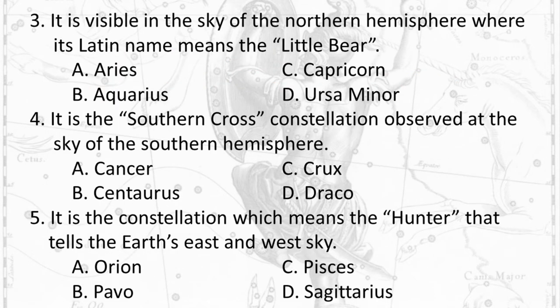Question 3: It is visible in the sky of the northern hemisphere where its Latin name means 'the Little Bear.' A. Aries B. Aquarius C. Capricorn D. Ursa Minor.